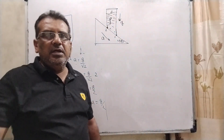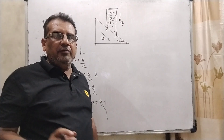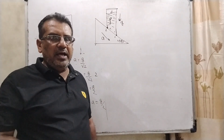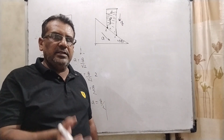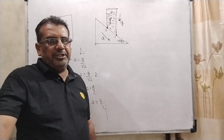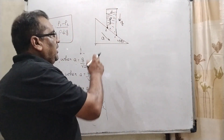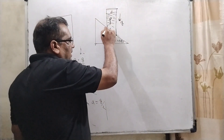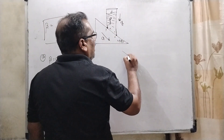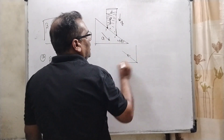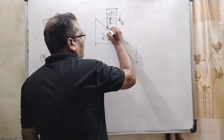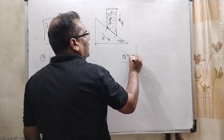Acceleration due to gravity is acting in the downward direction. One important thing: any liquid which is contained in a tube or bottle and sliding in the downward direction — the liquid experiences acceleration in the upward direction. This is called pseudo acceleration. So although the tube is sliding downward, the pseudo acceleration is acting in the upward direction.